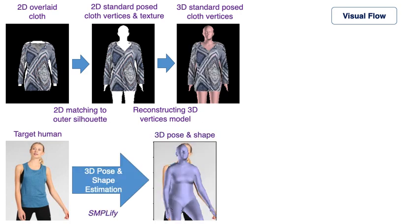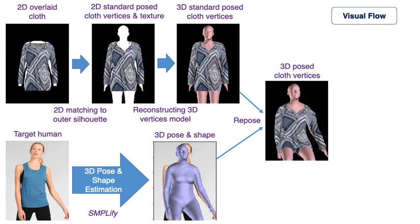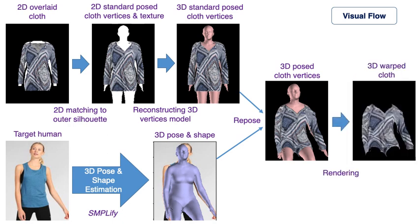Then we apply the estimated 3D pose and shape from the target human to the 3D cloth model, which produces the 3D deformed cloth. We then render the deformed cloth model to get the 2D warped cloth.